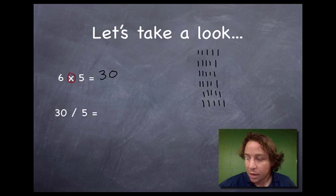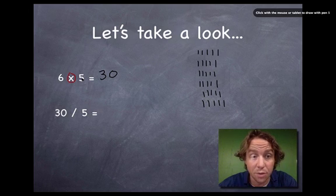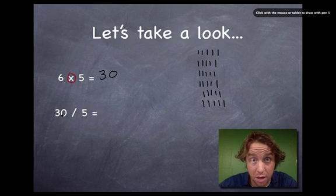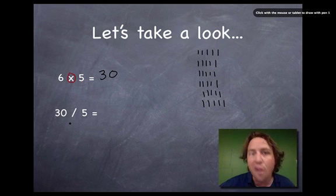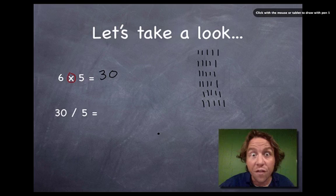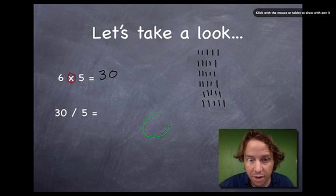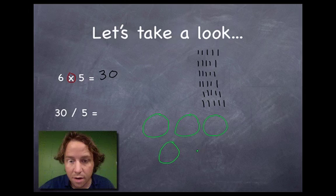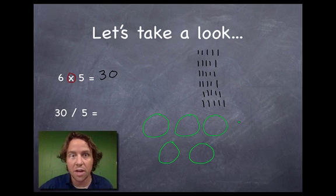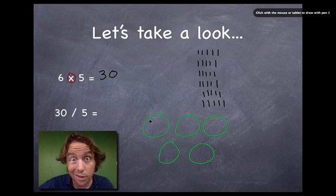Remember how six groups of five was 30? Now we're going to take 30 and cut it up into five groups. Let's say you had four friends and your mom made 30 cupcakes. You're like, 'Guys, this is gonna be the best slumber party ever — 30 cupcakes!' And your buddy asks, 'Well, how much do we each get?' Let's find a visual way to break that up into groups.